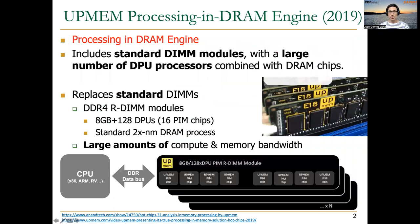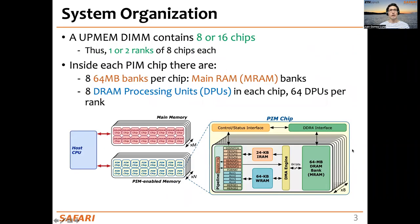The UPMEM PIM architecture is based on DDR4 DIMM modules. Inside each DIMM module, there are 8 or 16 chips. One rank contains 8 chips. Inside each PIM chip, there are 8 64-megabyte banks called MRAM banks and 8 DRAM processing units or DPUs. In total, we have 64 DPUs per rank and, typically in the most recent generation, 128 DPUs per DIMM.